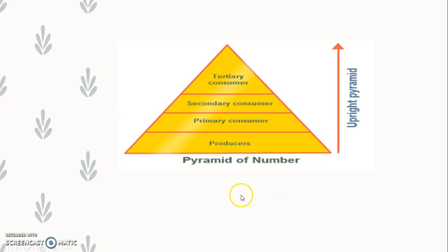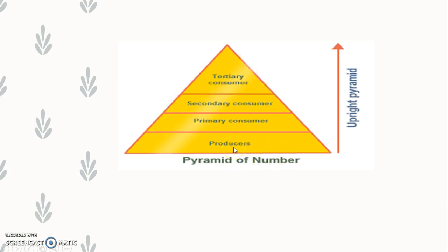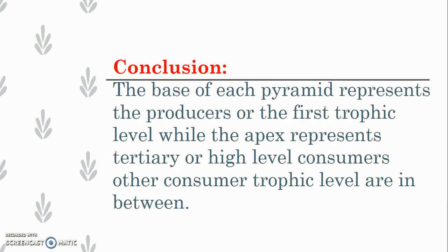The pyramid of number is also upright — it shows that numbers decrease as we go from bottom to top. Producers are many, primary consumers are fewer, secondary consumers are even fewer, and tertiary consumers are very few. Autotrophs or producers are at the maximum number, and tertiary consumers have the minimum number. This is an upright pyramid.